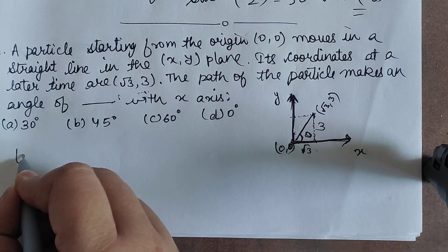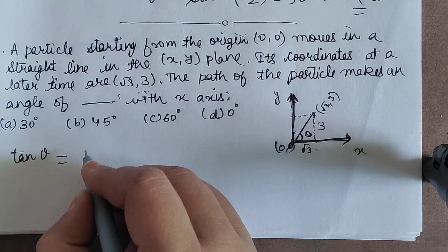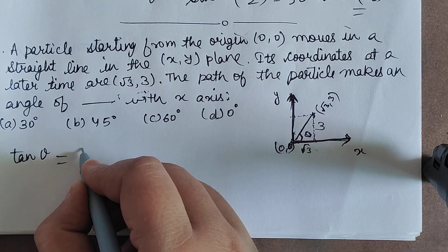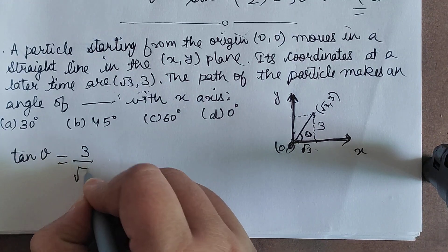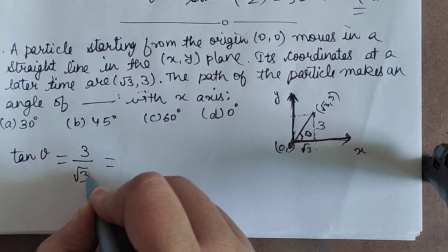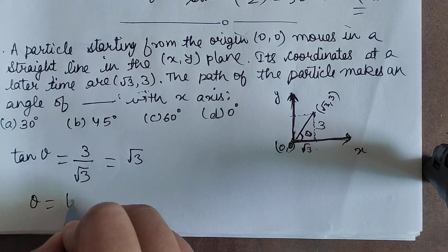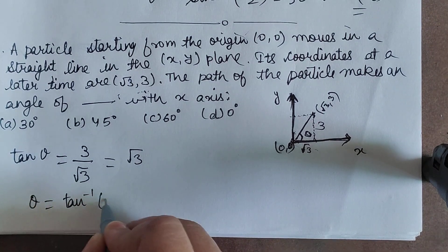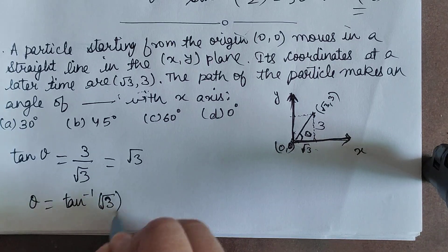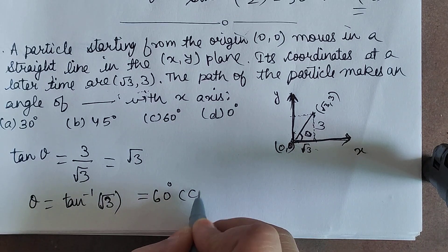So we get tan theta is equal to 3 over root 3, which will be equal to root 3. And tan theta is equal to root 3 because it will be 60 degrees which is our option C.